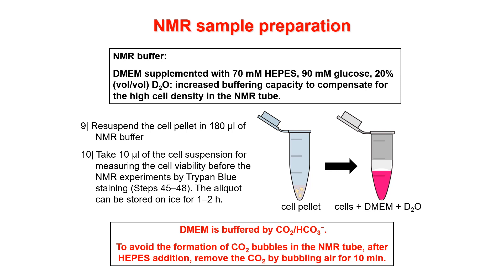Now it's time to resuspend this pellet into the NMR buffer. The NMR buffer is essentially DMEM but with modified composition to account for effects you would otherwise have in the NMR sample. We supplement DMEM with 70 mM HEPES final concentration to stabilize the pH, and add 90 mM glucose to compensate for the high cell density in the NMR tube, since cells metabolize glucose very quickly. We also add 20% D2O so that when mixed with the cell pellet you end up with about 10% D2O in the cell suspension, which is good for locking the NMR spectrometer.